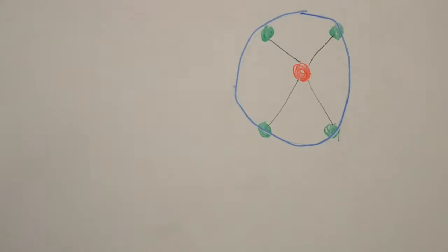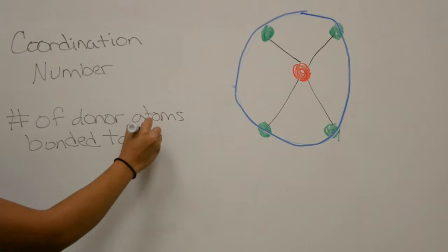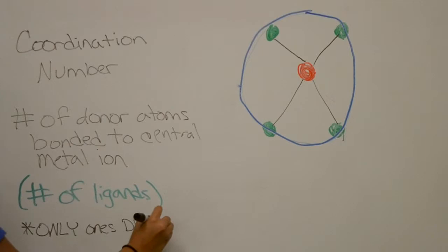The coordination number is the number of donor atoms bonded to central metal ion or the number of ligands. It is only the ones directly bonded to the metal.